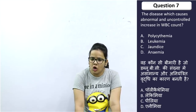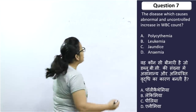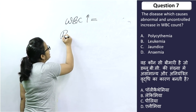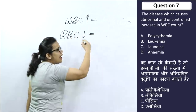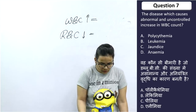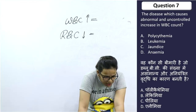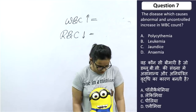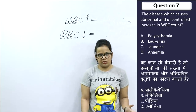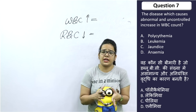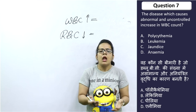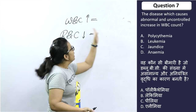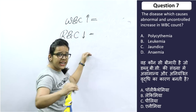The next question: Which disease causes a normal and uncontrolled increase in WBC? The answer is leukemia — blood cancer. When the number of white blood cells increases abnormally, leukemia occurs. Remember: when WBC increases, leukemia occurs; when RBC decreases, anemia occurs.